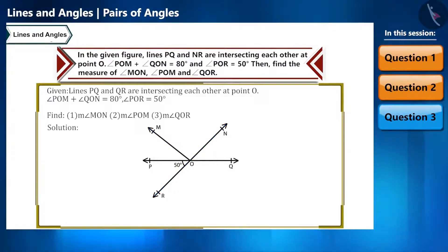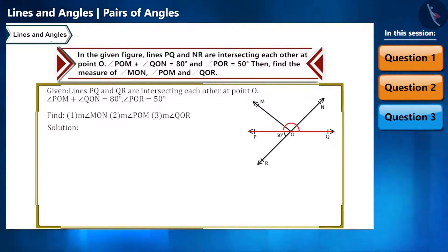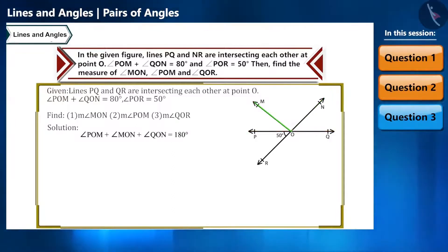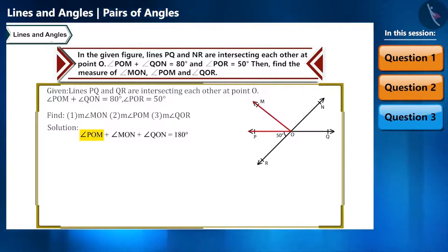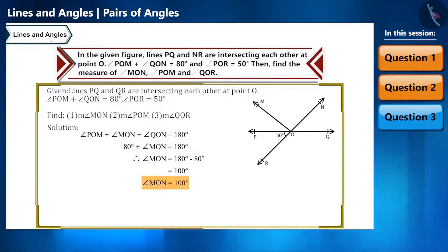We are given angle POM plus angle QON equals 80 degrees. Angle POQ is a straight line, so angle POQ equals 180 degrees. That is, angle POM plus angle MON plus angle QON equals 180 degrees. Substituting the known value: angle MON equals 180 minus 80, so angle MON equals 100 degrees.